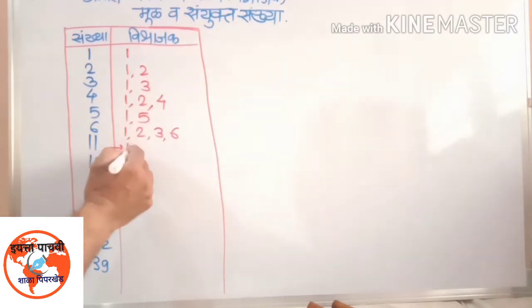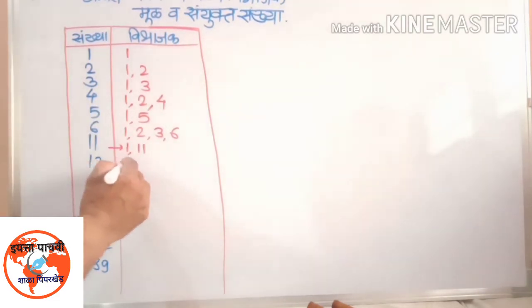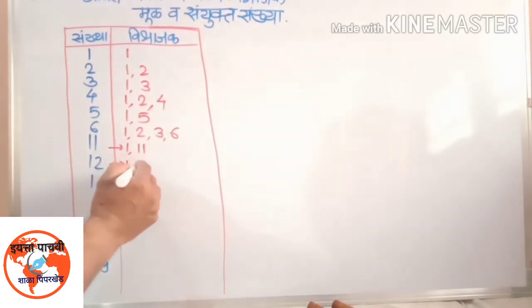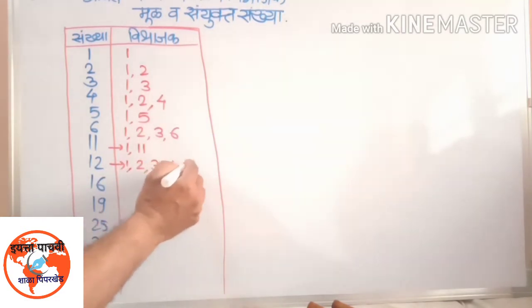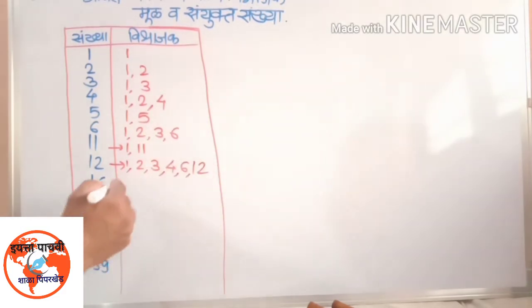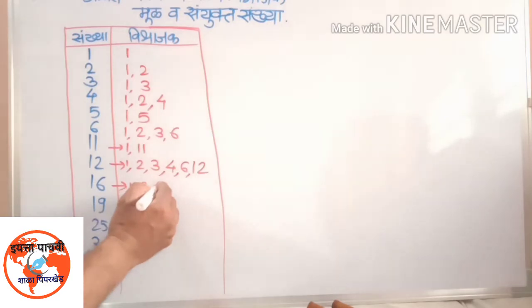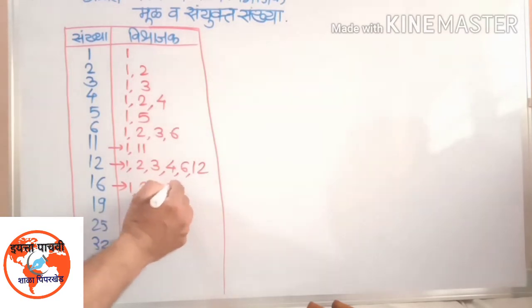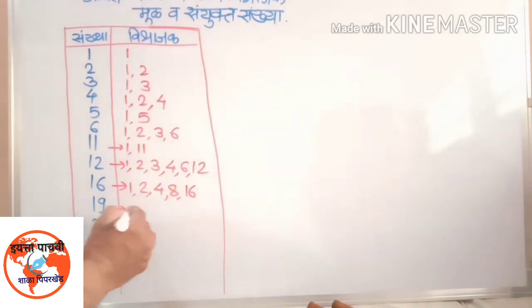एकाने आणि आकराने जातो बाराला. एकाने, दोनाने, तीनाने, चाने, सानाने आणि बाराने भाजतो सोळाला. एकाने, दोनाने, चाने, आठाने आणि सोळाने भाजतो 21 ला.